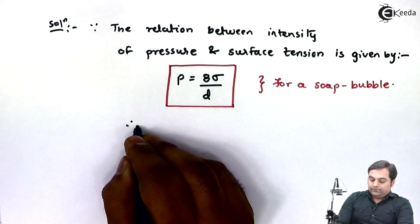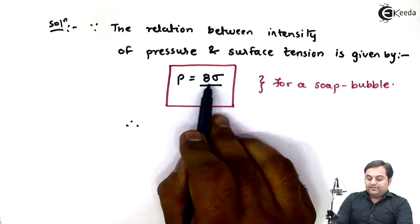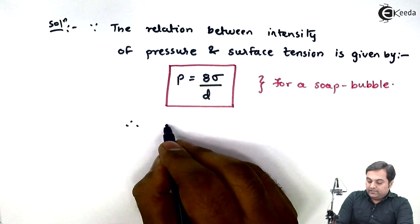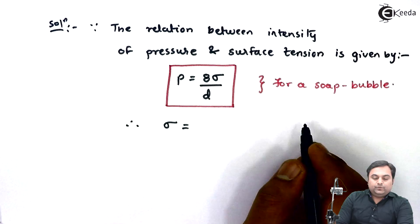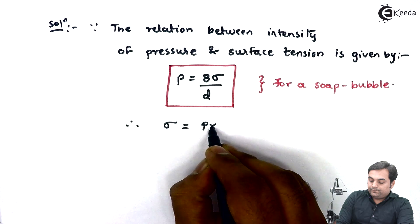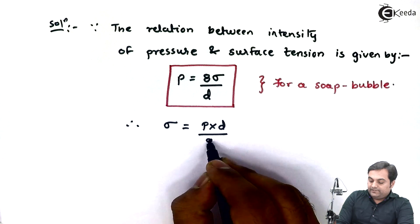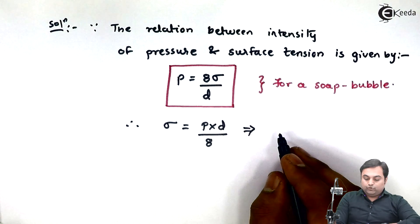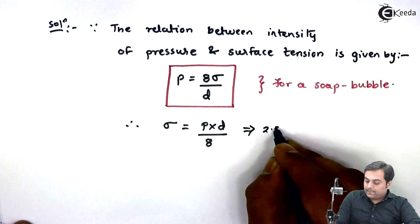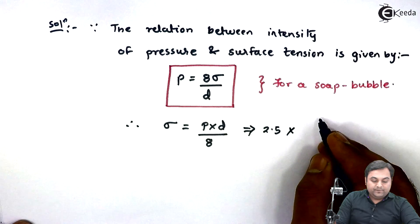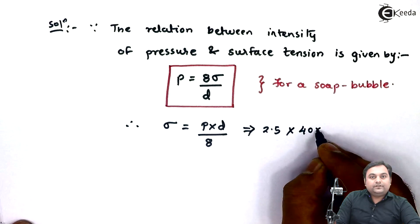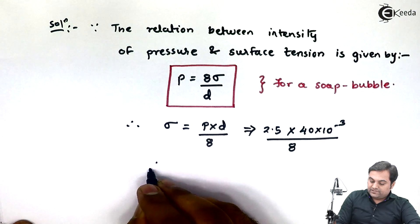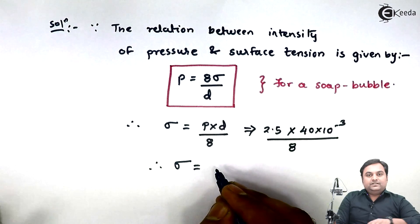Now, for a soap bubble, we have to calculate surface tension, so Sigma is equal to P into D divided by 8. This is equal to 2.5 into 40 into 10 raise to minus 3 divided by 8. From this, if I calculate my answer of Sigma...